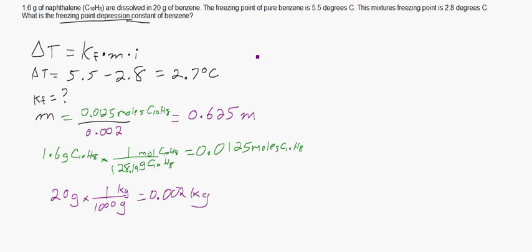So, let's set that up. So, we got our delta T. That's 2.7 degrees C. We are looking for KF. We found our molality. And the Van't Hoff factor is just 1, so we're not going to worry about it. So, we have it all set up. When you work that out, you will get KF is equal to 4.32. I believe the units for that are degrees Celsius per molal.